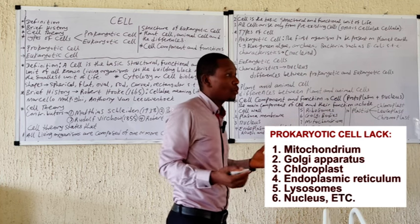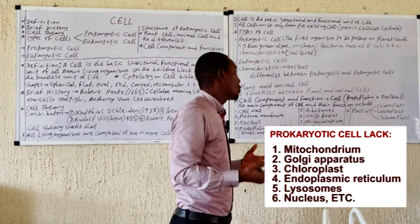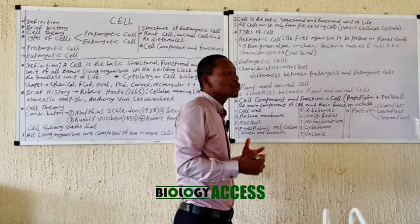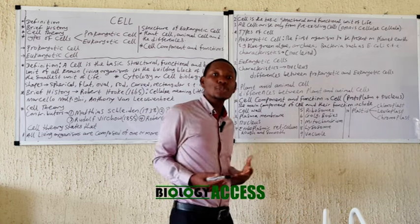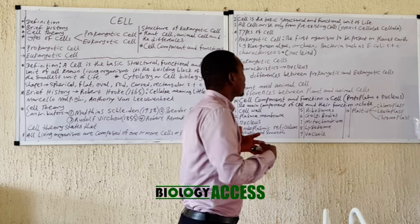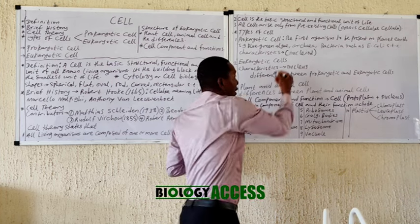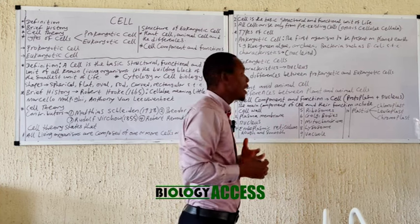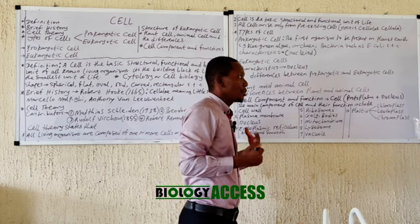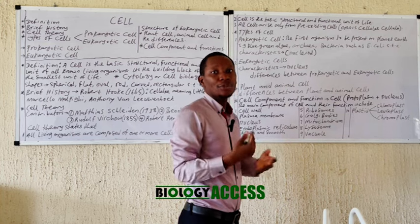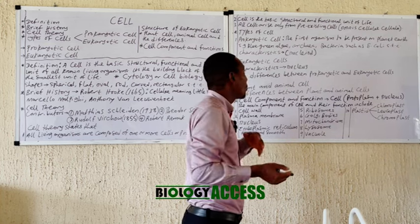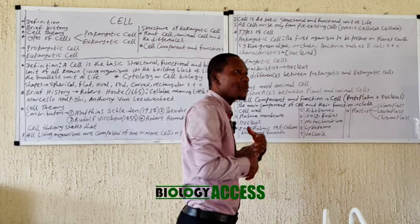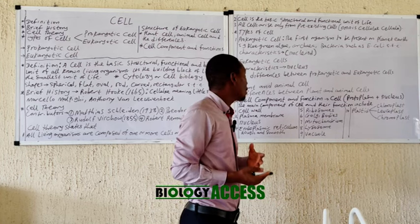Prokaryotic cells usually reproduce by binary fission, and in some cases sexually by conjugation. Some are free-living and carry out photosynthesis, while others inhabit extreme environments — some are acidophiles living in acidic conditions, and some are thermophiles living in very high temperature conditions.